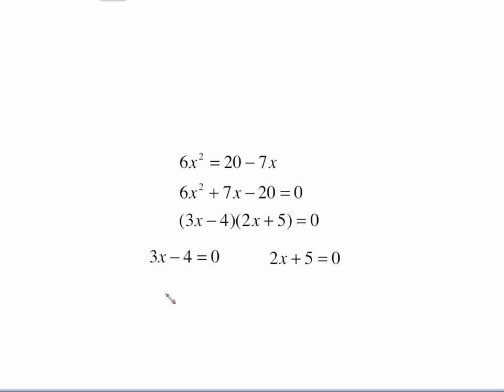And then you just have two little simple two-step equations to solve. To get this x alone, you'll start by adding 4 to both sides. On this one, you'll start by subtracting 5 from both sides, and then this is just simple division.